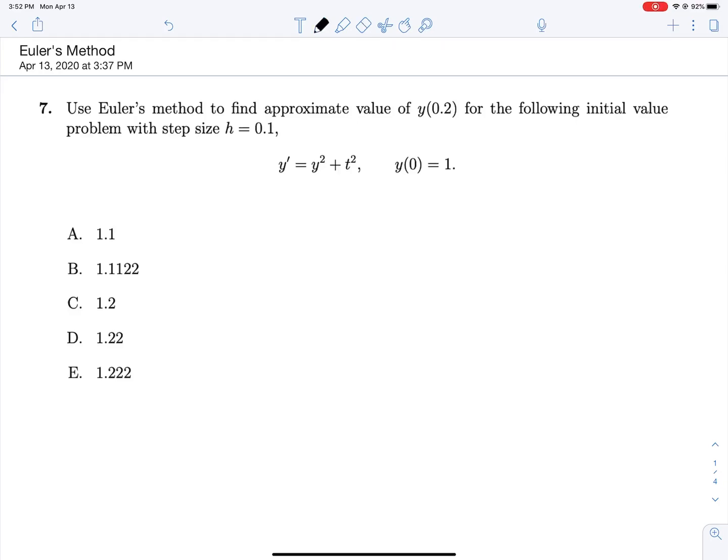we're using Euler's method to find an approximate value for y at 0.2 for the initial value problem with step size h equals 0.1. So we know right off the bat that y at 0 is equal to 1 when we want to approximate our next step up, which will be at y at 0.1,